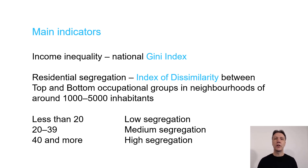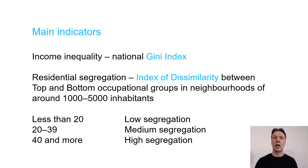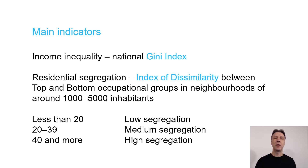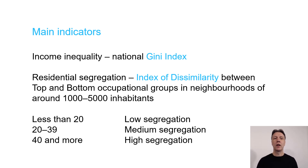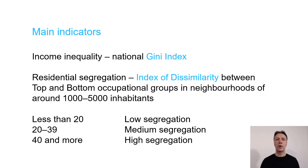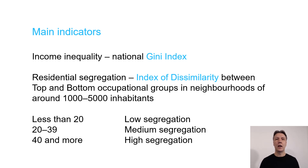We interpret the values of the dissimilarity index as follows: if the value is less than 20, the segregation level is low; if it's more than 40, the segregation level is high; and when it's between 20 and 39, it's a medium level. For example, a dissimilarity index value of 20 means that 20% of the low-income workers have to move to a different neighborhood in order to achieve a similar distribution across neighborhoods as high-income workers.